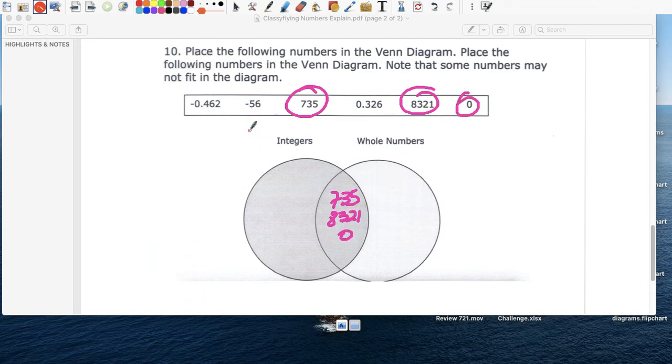Negative 0.462, it's not there. And we're not going to put it in the circle because it doesn't belong in either of those. And neither does, so we put these four, but neither. So this doesn't fit in this particular Venn diagram. So negative 0.462 doesn't fit in the diagram, and 0.326 also doesn't belong anywhere in the Venn diagram.